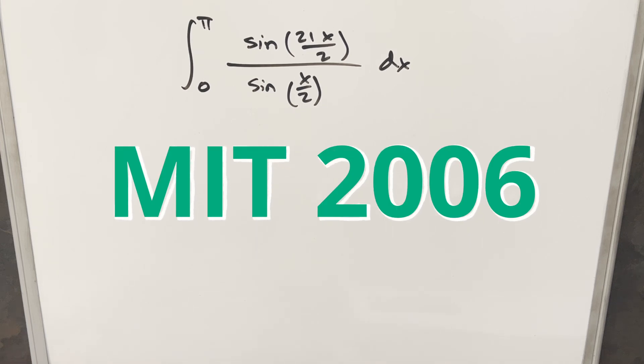Okay, we have here another interesting integral. This one's from the MIT integration B 2006. We have the integral from 0 to pi sine 21x over 2 over sine x over 2 dx.